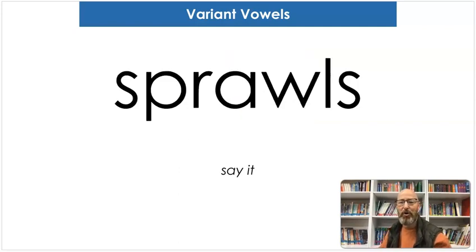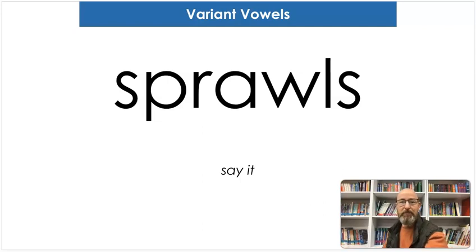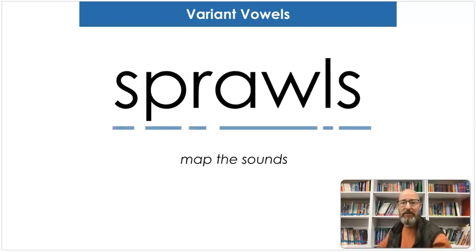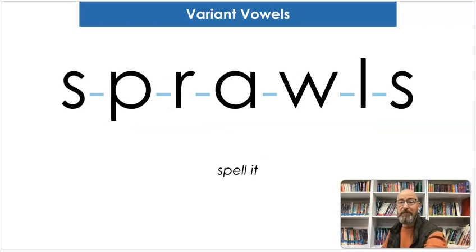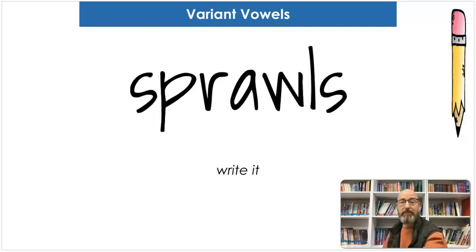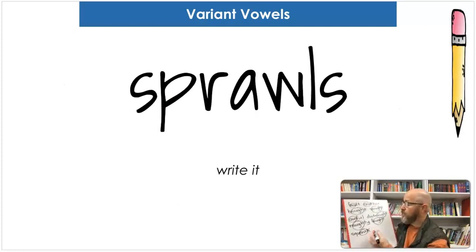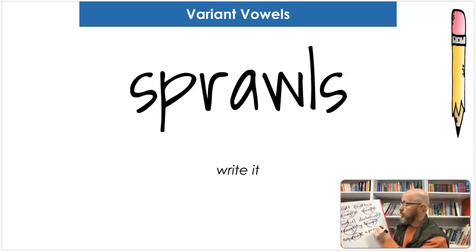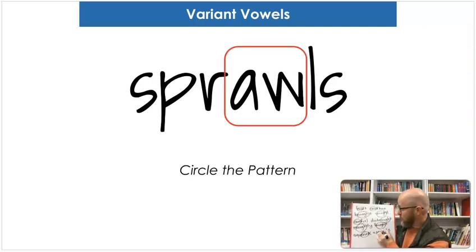Our next word is sprawls. Say sprawls. That means you spread it out — usually if somebody sprawls out on the floor, they kind of lay out and spread out, maybe watching a movie or something. Map the sounds: S-P-R, aw, L, S. Sprawls. Spell it: S-P-R-A-W-L-S. Sprawls. And let's write it: S-P-R-A-W-L-S. What makes the "aw" sound? A-W. That's right. Circle it.